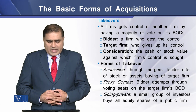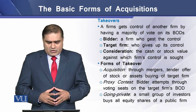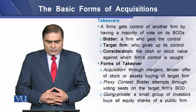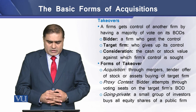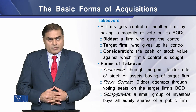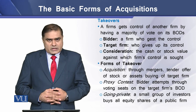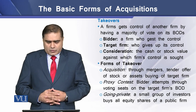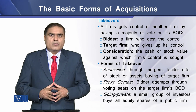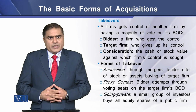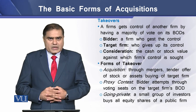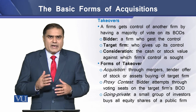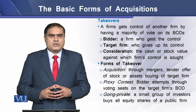Consideration is the price in terms of cash or stock value against which the firm's control is undertaken by the bidder. Forms of takeover: there are three forms. The first is acquisition, which takes place through mergers, tender offers of stock, or buying of assets of the target firm. The second is proxy contest, where the bidder attempts to gain voting seats on the target firm's board of directors. The third is going private, which refers to a situation where a small group of investors buys all equity shares of a public firm and gets its equity shares delisted from the stock exchange, turning it into a private company.